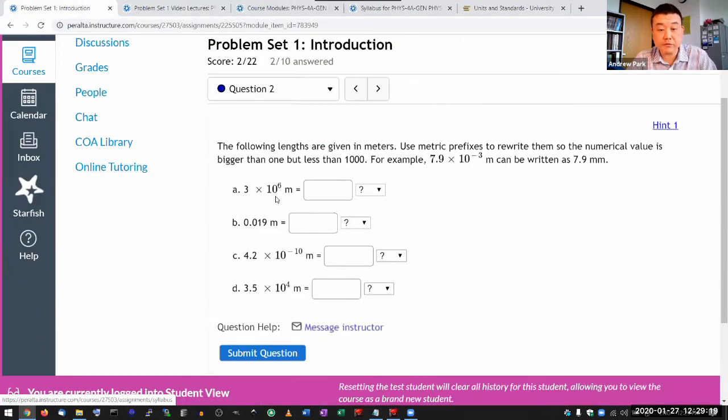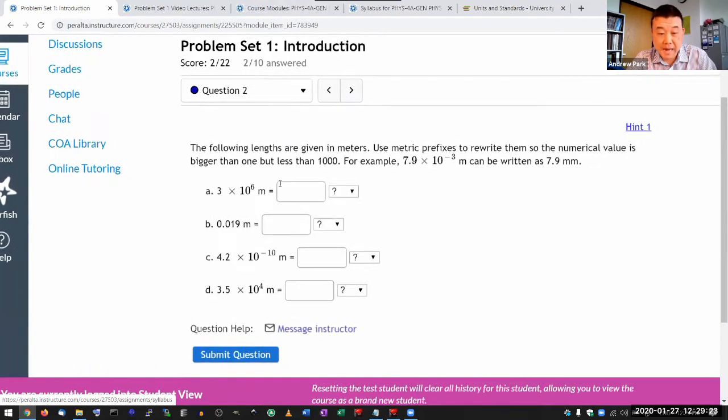So, 3 times 10 to the 6. I know I can associate 10 to the 6 with a mega prefix. So I'm going to choose megameter. I don't know why it was appearing there. So this megameter is already 10 to the 6 meters. So there should be 3.